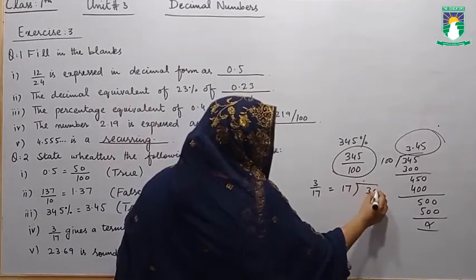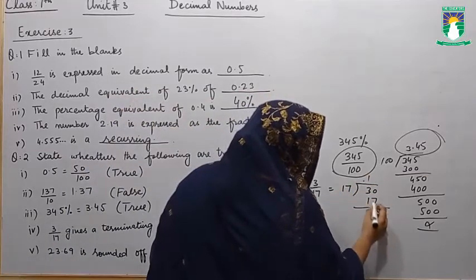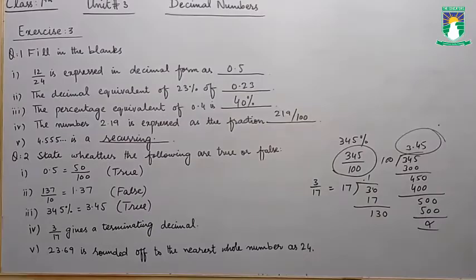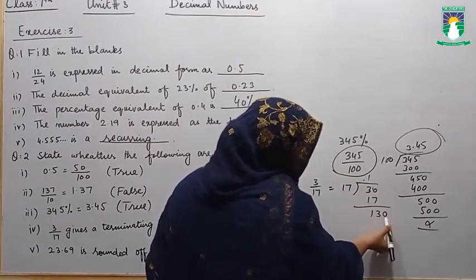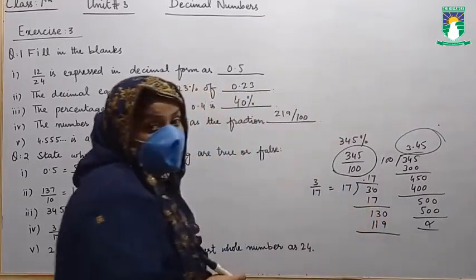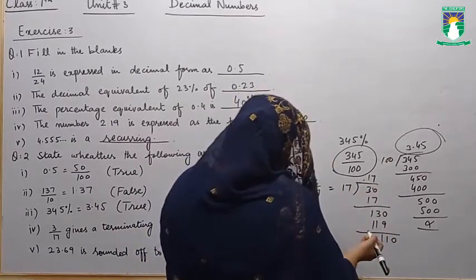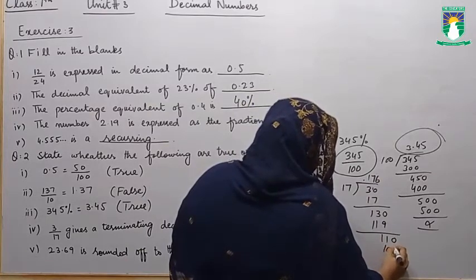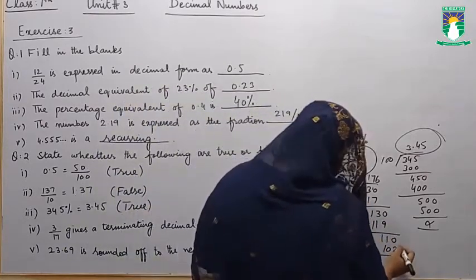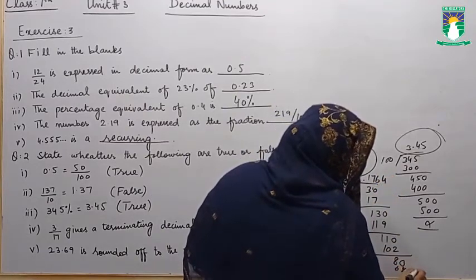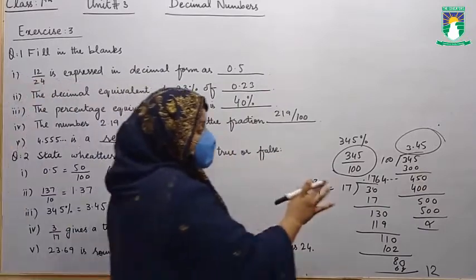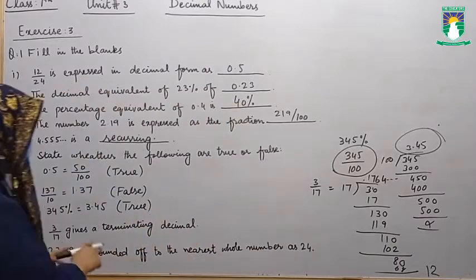Since 3 is smaller than 17, we place a decimal point and 0. 17 ones are 17; remainder 13. Bring down 0 to get 130. 17 sevens are 119; remainder 11. Bring down 0 to get 110. 17 sixes are 102; remainder 8. Bring down 0 to get 80. 17 fours are 68; remainder 12. The value keeps continuing — it means this is a recurring, non-terminating decimal fraction. So it is a false statement.